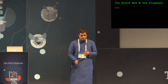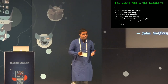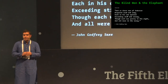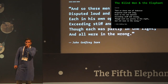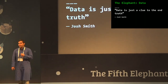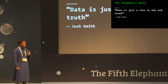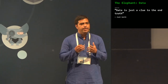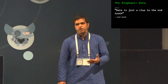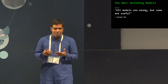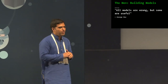All six men of Hindustan disputed loud and long, each in his own opinion exceeding stiff and strong, though each was partly in the right and all were in the wrong. This is really true about a lot of work we do. The elephant, keeping the theme with this conference, is the data. The data is actually just a clue to the end truth — it is not the final picture. What you're trying to do with model building is really understand that data and see how you could build a better or simpler representation of it. The men in this case are really building models, and all models are wrong but some are useful.